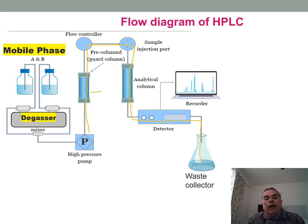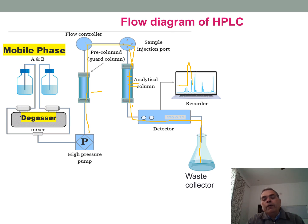The sample injected into the injection port goes into the analytical column, where all components of the sample are separated. After that, each component goes to the detector. The detector detects each component and converts it into a signal, sends that signal to the data processor, and the data processor converts the signal into a peak.